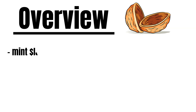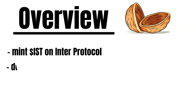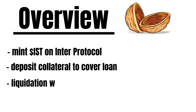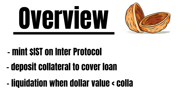In a nutshell, users can mint IST on the Inter Protocol by depositing collateral to cover their loan, because when minting IST you essentially borrow IST. When paying the debt off, users can take their collateral out again. If the dollar value of the collateral you initially deposited falls below the collateralization ratio, the protocol liquidates your loan.